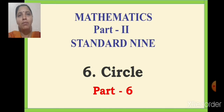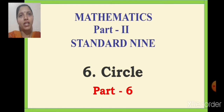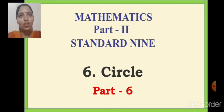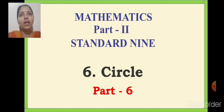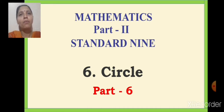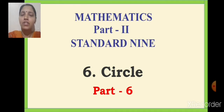Now first, what is incircle? The circle which touches all sides of a triangle internally is called incircle, and the center of the circle is incenter. Now what is circumcircle? Circumcircle is the circle that passes through all the vertices of a triangle and the center of the circle is called the circumcenter.